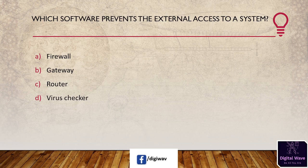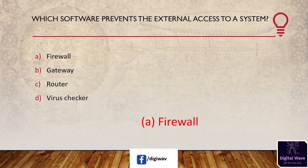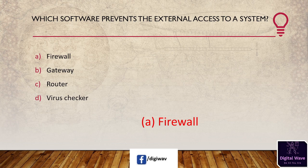Next question: which software prevents external access to a system? Options are: firewall, gateway, router, and virus checker. The answer is firewall. A firewall is a network security software that prevents unauthorized users and dangerous elements from accessing the network. A software firewall acts as a filter for the network which prevents harmful information.